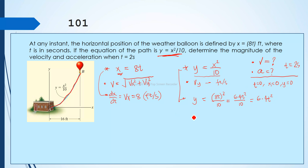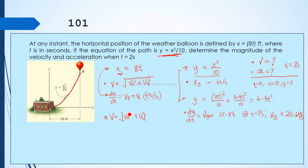Differentiating Y = 6.4T² with respect to time gives Vy = 12.8T ft/s. At T = 2 seconds, Vy = 12.8 × 2 = 25.6 ft/s. Finally, the magnitude of velocity is the square root of Vx² + Vy² = square root of 8² + 25.6², which equals 26.821 ft/s.